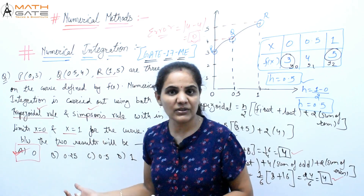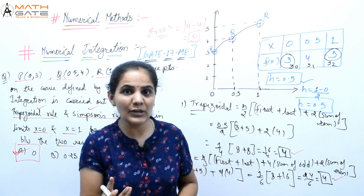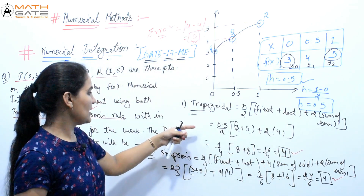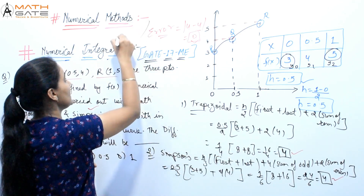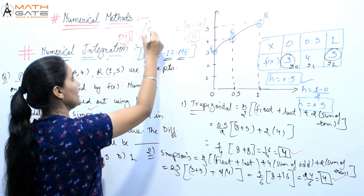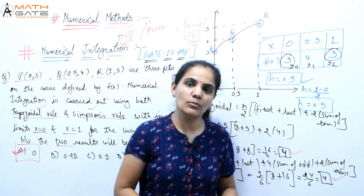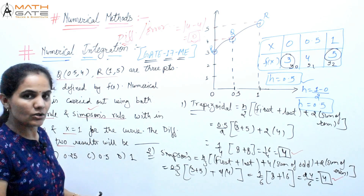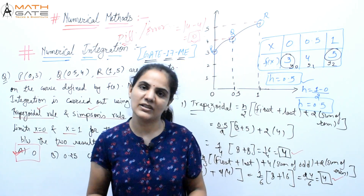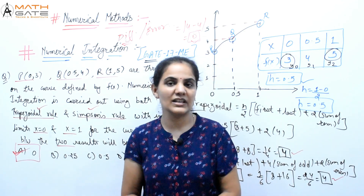The error find out from a given function with 3 points: when both Trapezoidal and Simpson's methods are applied, the difference is 0. Difference and error are the same thing here. So the error between Trapezoidal and Simpson's is 0, and the answer is option A.